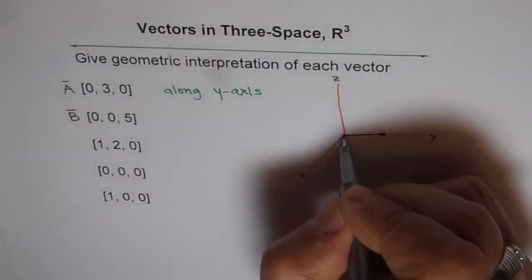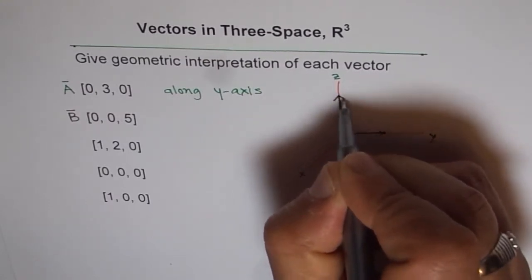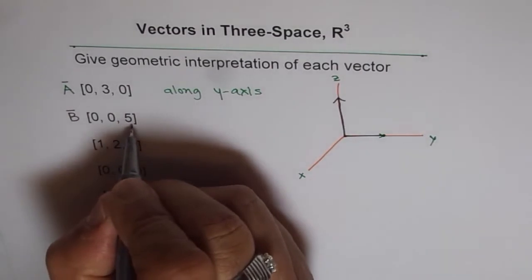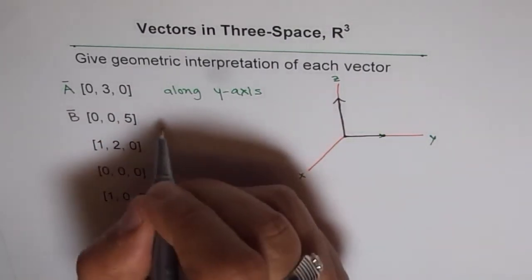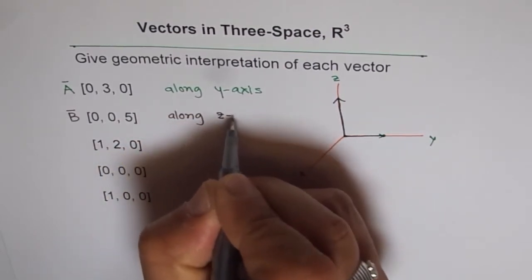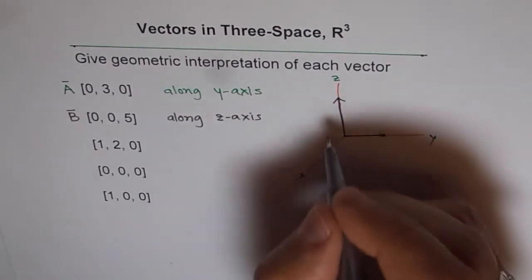So that is the vector which is along the z-axis, five units directing towards z. So this is our vector B, and the first one was our vector A.